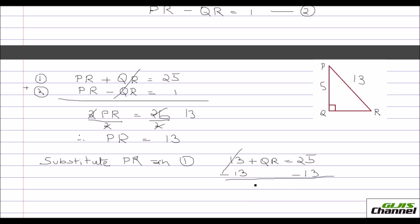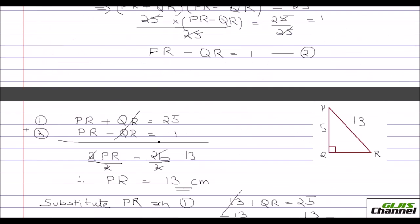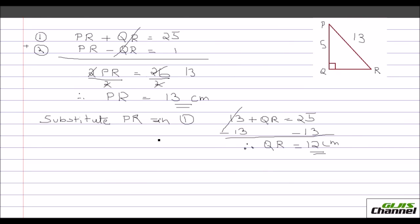So this will get cancelled. So your QR, therefore your QR is equal to 12 centimeters. Now you got your PR and the QR. It is easy to find out what has been asked. They've asked you cos P, sin P and tan P. Let's do that here. So you have the picture there and your QR is 12 now.